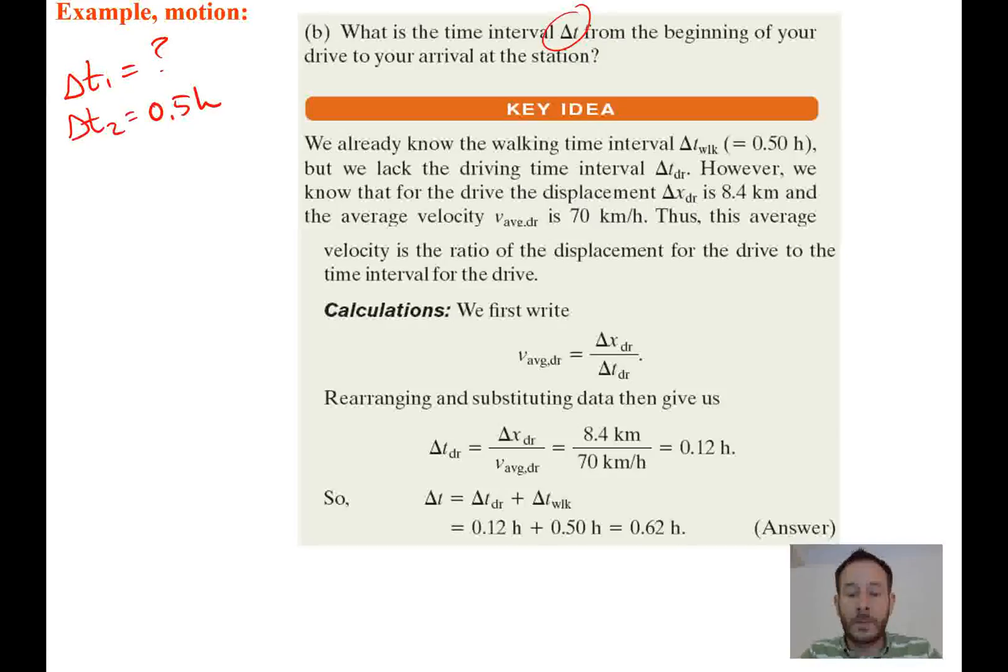However, we know that for the drive the displacement delta x dr is 8.4 kilometers and the average velocity is 70 kilometers an hour. So we can use that information and we can find what our delta t is. So given this equation, but we need to rearrange it before we can actually use it, because really delta t is what we're trying to find.